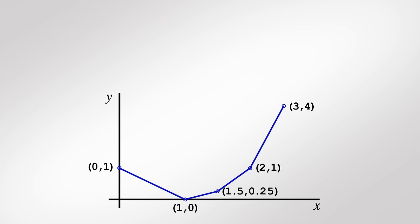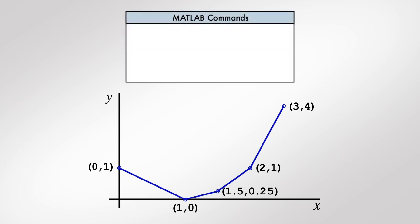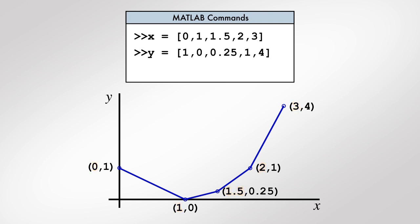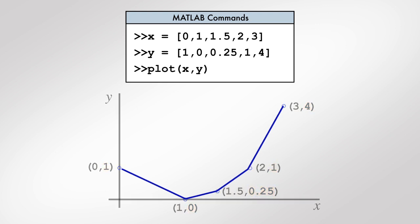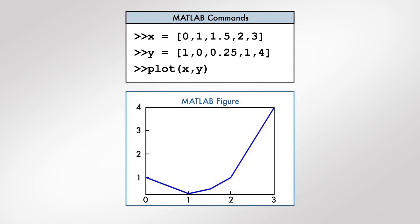To create a graph in MATLAB, first create a vector that contains all the x-coordinates, and create another vector that contains all the y-coordinates. This command creates a new figure that contains a graph of the points.